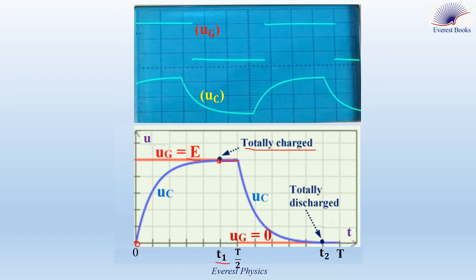During the second half of the period — between T/2 and T — we have the discharging phase of the capacitor. UG = 0, and UC starts at maximum equal to E and decreases gradually until it becomes equal to zero at instance T2. At this instance the capacitor is totally discharged and the steady state is attained. UC remains equal to zero between T2 and T. The discharging phase is also divided into two parts: between T/2 and T2 is the transient phase, and between T2 and T is the steady state.